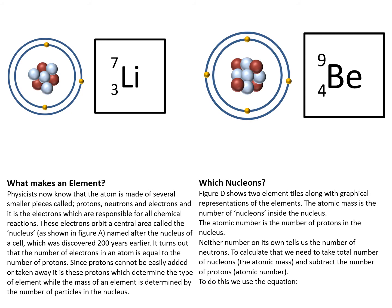Here we have the example element tiles for lithium and beryllium. Lithium you can see has seven things in the nucleus and so its atomic mass is seven and it has three protons and so its atomic number is three. Meanwhile, beryllium is beryllium because it has four protons in the center and its atomic mass is going to be nine because there are nine objects in the center. This is five neutrons and four protons.